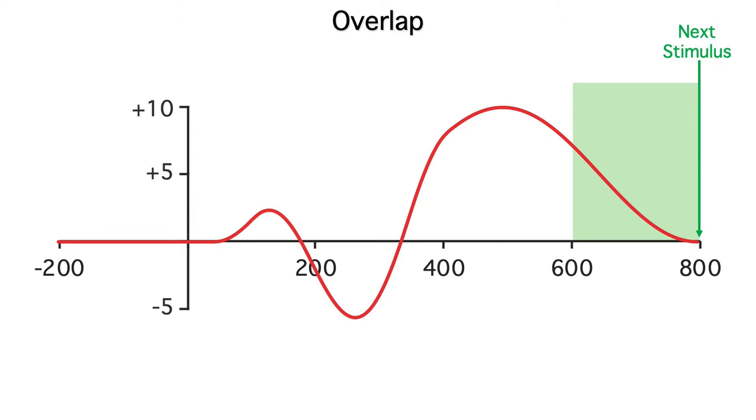So the last part of the waveform from the current stimulus will be present during the pre-stimulus baseline of the next stimulus. So the green line here is what our data will actually look like. It's the overlap from the previous trial plus the ERP from the current trial.